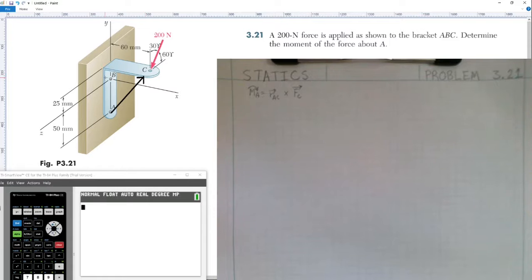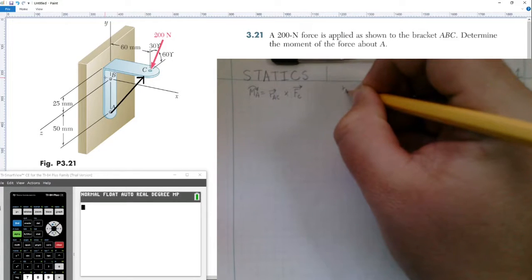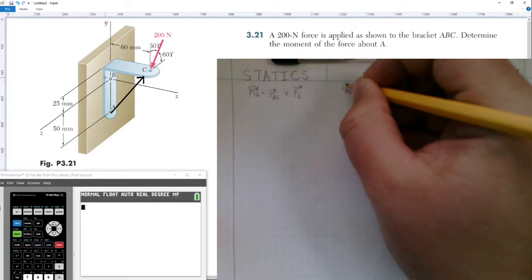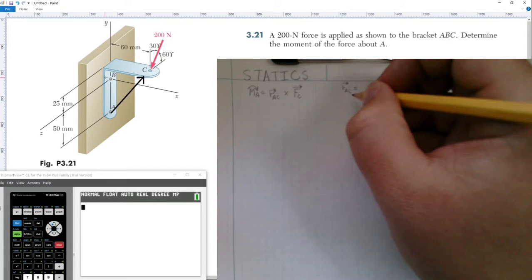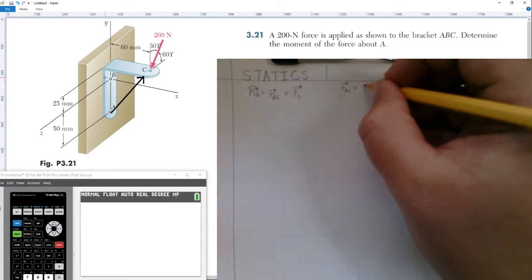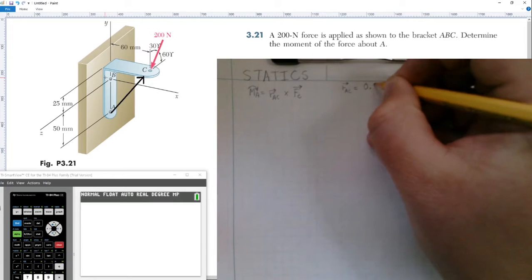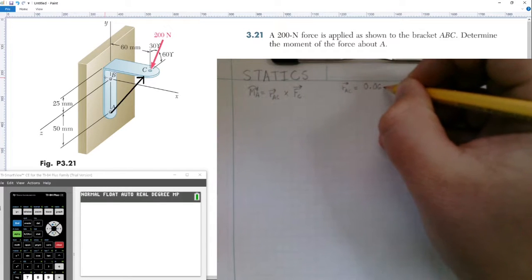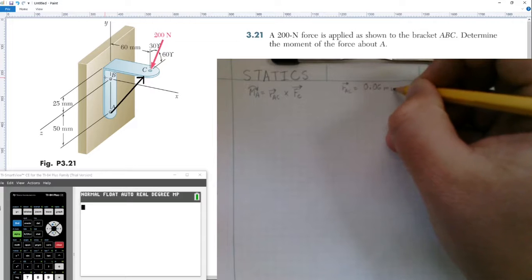My position vector from A to C will simply be the distance in the x-axis, which is 60 millimeters. We'll convert this into our base unit of 0.06 meters in the i-hat direction.